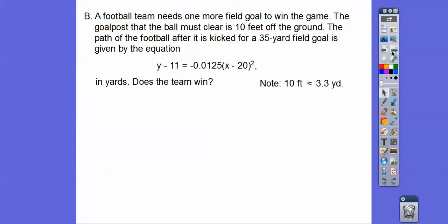So here's another one. A football team needs one more field goal to win the game. The goalpost of the ball must clear a 10-foot goalpost that's 10 feet off the ground. So the path of the football after it's kicked for a 35-yard field goal is given by this equation. So here's the field goal. It goes pew. When it starts going up, then it comes back down. It makes a negative parabola. That's why that's a negative right there.